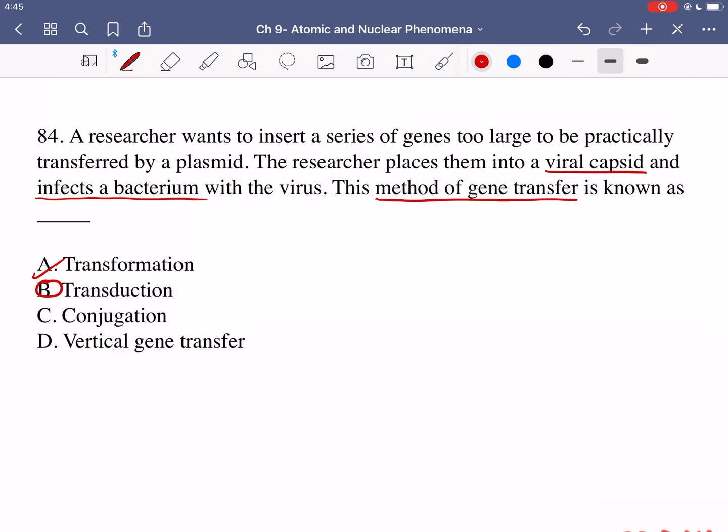Conjugation. That is when we have genes being transferred directly between two bacteria. So one bacterium interacts with another and it transfers its genes and that's just between two bacteria and not anything to do with a viral intermediate. So that is also incorrect. And finally vertical gene transfer is the transfer from parents to offspring. And that's not what's going on here. We're talking about a virus interacting with a bacterium and therefore there's no parent-offspring relationship going on here. So vertical gene transfer is also incorrect.